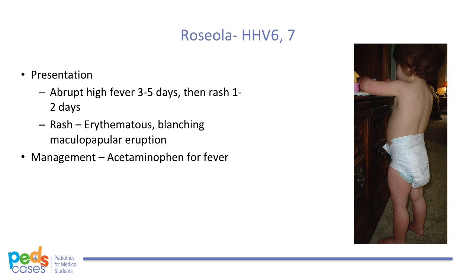The next virus to consider is human herpes virus 6, which causes roseola infantum, also called exanthem subitum or sixth disease. It is a common febrile childhood illness characterized by an abrupt high fever for 3 to 5 days, then defervescence, then the rash appears and lasts for 1 to 2 days. The rash is described as an erythematous maculopapular eruption — discrete, pale pink lesions that are 2 to 5 millimeters in diameter on the neck, trunk, buttocks, and possibly the face and proximal extremities. The lesions blanch with pressure. This illness can also present with mild cough, coryza, anorexia, abdominal discomfort, and lymphadenopathy. The fever can be treated with acetaminophen.